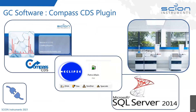For GC software, in addition to the hardware, there's software to operate and control the GC and acquire the data. The Compass CDS — Science Compass CDS — is used for that. Once the data files are obtained, a plug-in called the Eclipse Picture Reporter plug-in is used for the SIMDIST and DHE analysis.